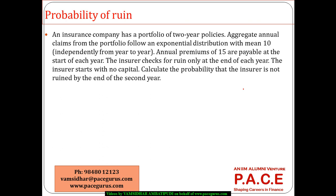Let's look at a simple numerical associated with a simple calculation of probability of ruin. An insurance company has a portfolio of two-year policies. Aggregate annual claims from the portfolio follow an exponential distribution with a mean of 10, so lambda is 1/10, i.e., 0.1. Annual premiums of 15 are payable at the start of each year. The insurer checks for ruin only at the end of each year, and the insurer starts with no capital.